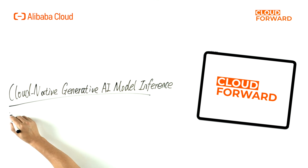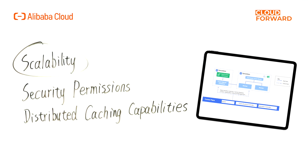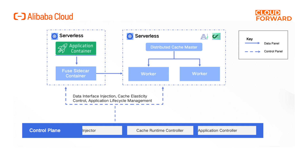How does Fluid achieve elastic acceleration and cost optimization for Cloud Native generative AI model inference scenarios? To address the complexity of using distributed caching and the significant differences in operating environments, as well as the need for adaptation for AIGC applications, Fluid offers out-of-the-box acceleration capabilities for a standardized and unified user experience. Additionally, an increasing number of foundation model services run in serverless container environments on cloud platforms. However, due to scalability issues with storage components and security permissions, third-party distributed caching capabilities cannot be utilized. For this reason, Fluid provides distributed caching that can run in various computing environments, replacing PVC with a fused sidecar, with the user experience remaining unchanged, supporting the secure operation of cached components on serverless containers.